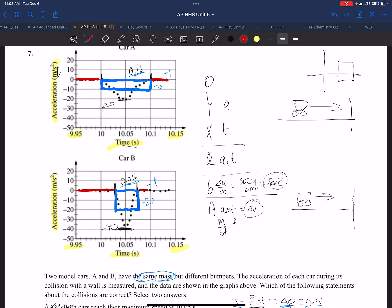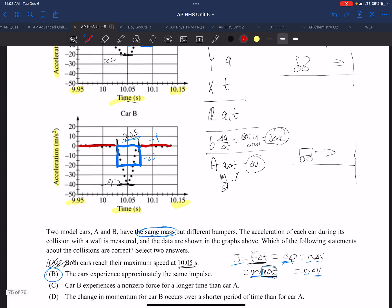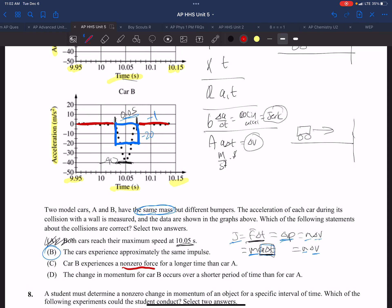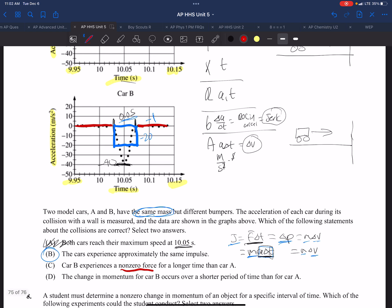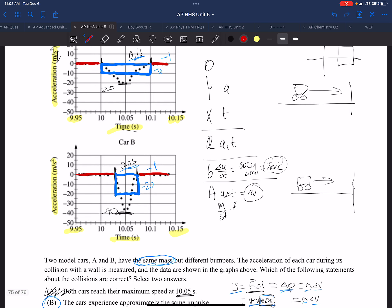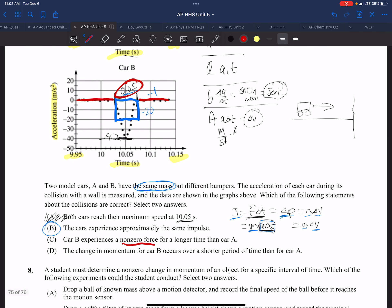Zero acceleration here and zero acceleration here. The non-zero force means everything that's not red, and it's saying for a longer time than cart A. Well, B has it for a little smaller time than cart A, so that's exactly backwards. Choice C is out.